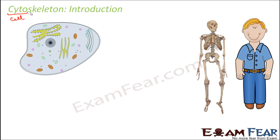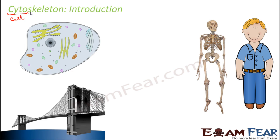There are some structures which together form the cytoskeleton. In human beings, bones and muscles form the skeleton; similarly, cells have specific structures that form the cytoskeleton. Think of it like a bridge — first the pillars are built, and then lateral structures are added on top of those pillars to provide additional support.